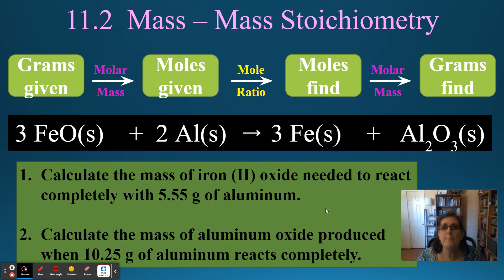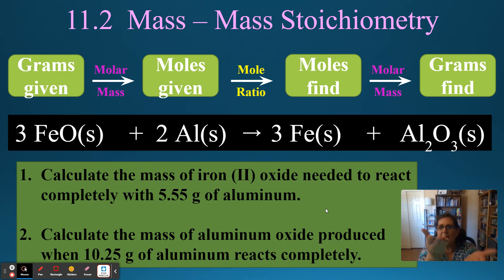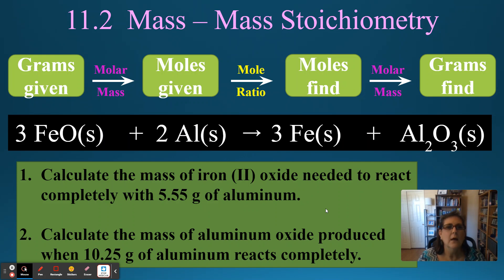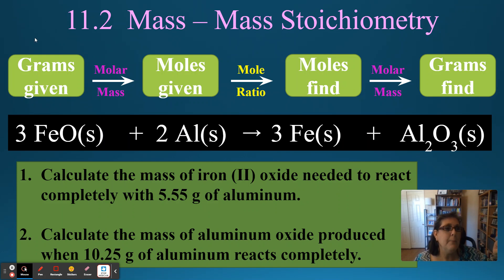Up here is kind of the map for doing these problems. We just did mole ratios, but when you're in the lab, you don't go measure out moles on the balance. Balances don't measure moles — they measure grams or pounds, but in chemistry we use balances that measure in grams. So in reality, we're going to start off with grams of a chemical, but to use a mole ratio, you have to be in moles. So the first step is to convert our grams that were given to moles of that given substance.